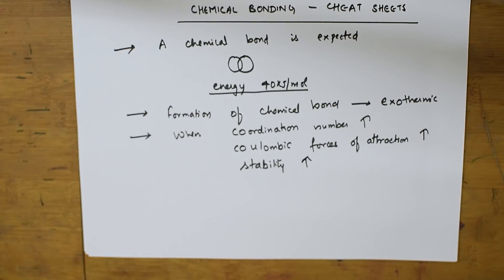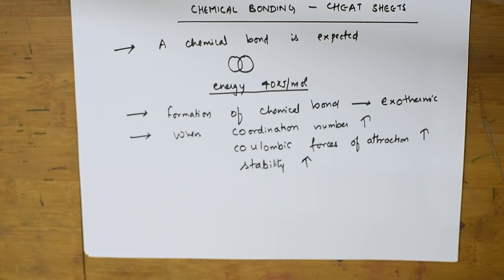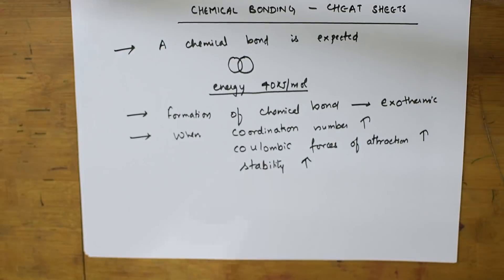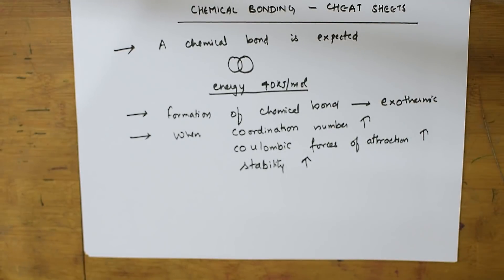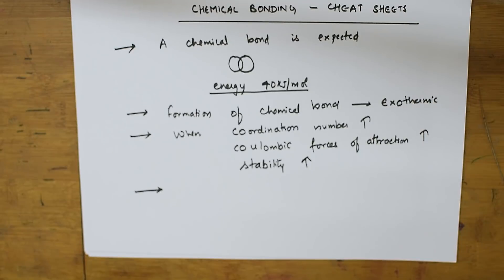Atomic crystals are formed by lighter elements which are present in the middle columns of the periodic table. We have s-block, p-block, d-block, and f-block, and atomic crystals are formed by lighter elements in the middle columns.